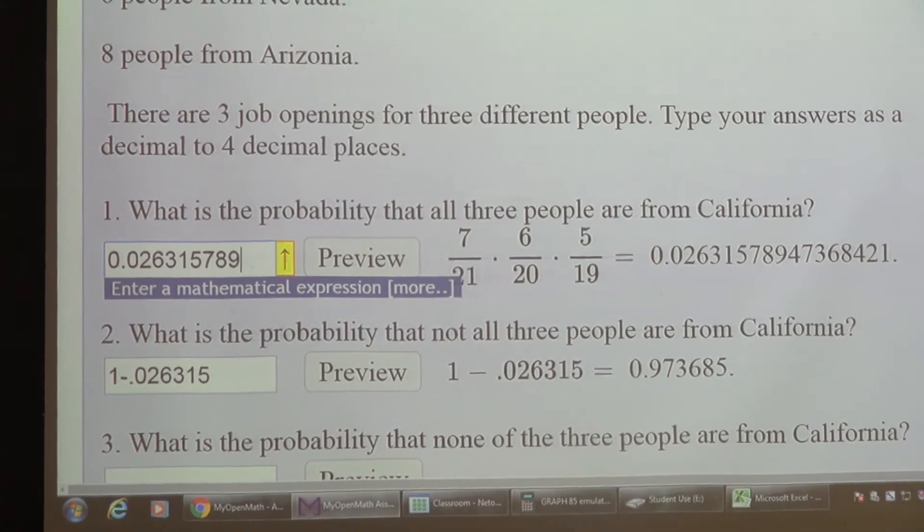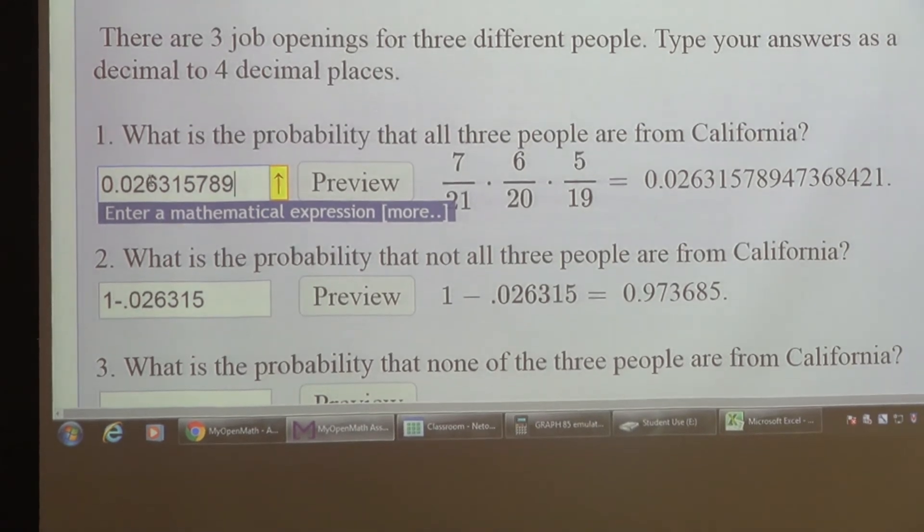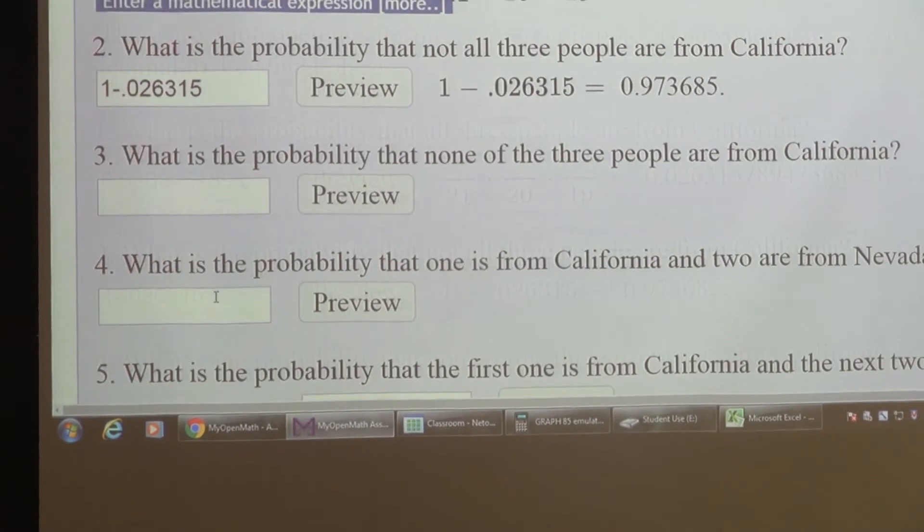So let's go on to the next one. This one is, what is the probability that not all three are from California? So you have to take one minus the previous answer to get that. Let's go to three.